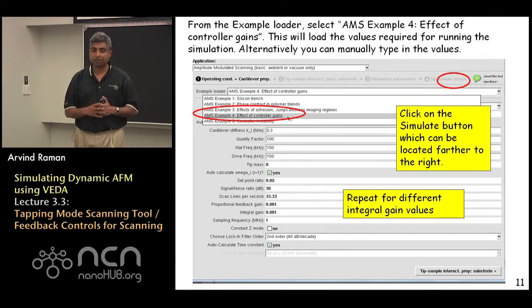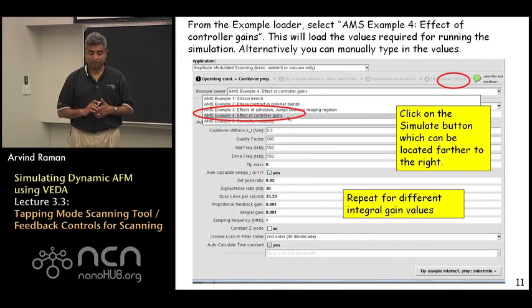So pretty much what you need to do is simply go to the operating conditions and try changing the integral and proportional values. In this particular case we are going to focus on integral gains.